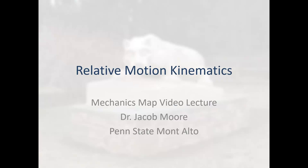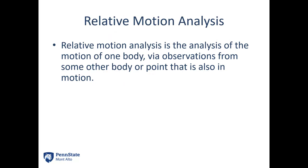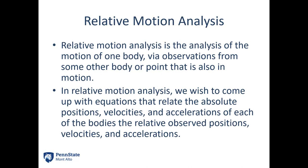Hello everyone. For today we're going to be talking about relative motion kinematics. Relative motion analysis in general is the analysis of the motion of one body via observations from some other body or point that's also in motion. So if we're moving and we observe something moving relative to us, how do we relate all of those positions and velocities? We wish to come up with some sort of equation that does this relationship.